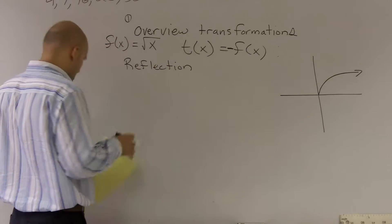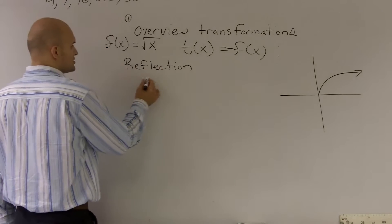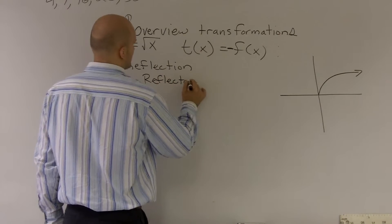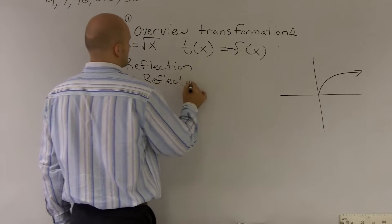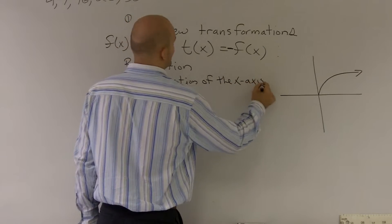So what happens when we multiply by a negative 1 is now going to be a reflection of the x axis.